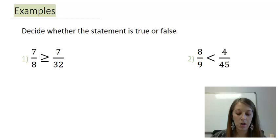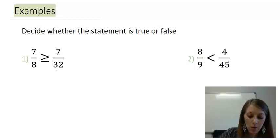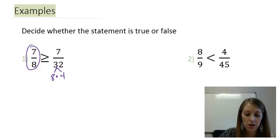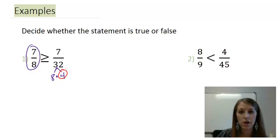So looking at example one, what is my least common denominator between 8 and 32, and we want to look at factors that they have in common. Well, this one should be fairly easy because 32 has a factor of 8, and it's actually 8 times 4.